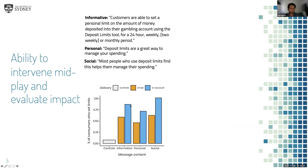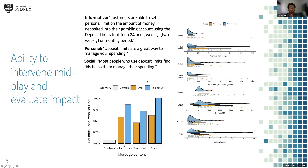We also performed a randomised control trial using simple messages just encouraging customers to set a deposit limit on their account. We found these simple messages led to small but notable increases in limit-setting compared to a control group — just under 1% of the sample. That might not seem like a lot, but that translates to thousands of people from a very simple, inexpensive message. What mattered most was not the type of message but how it was delivered — via email or in-account pop-up, with the latter being more effective. And people who set limits in response to our messages went on to reduce their gambling behaviour.